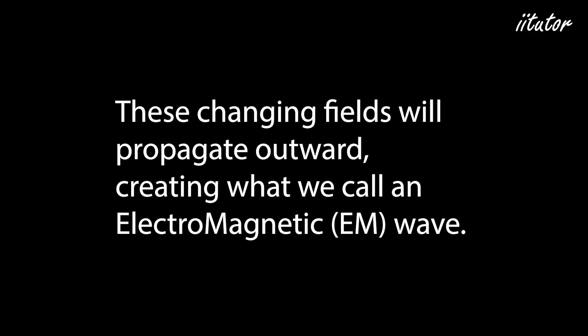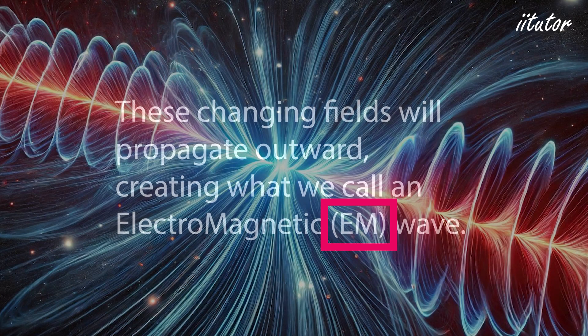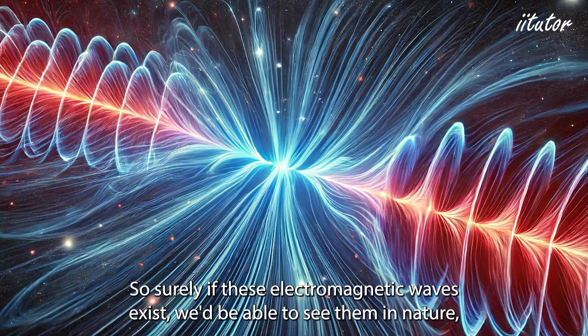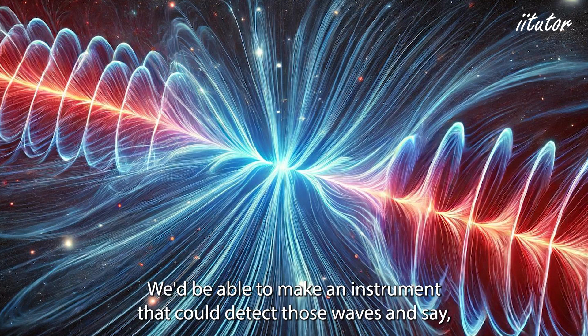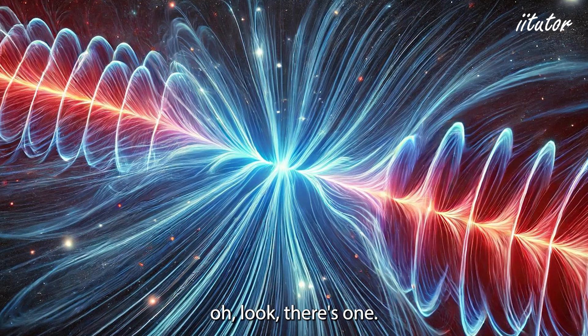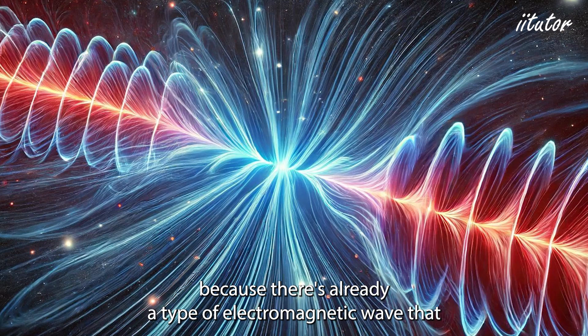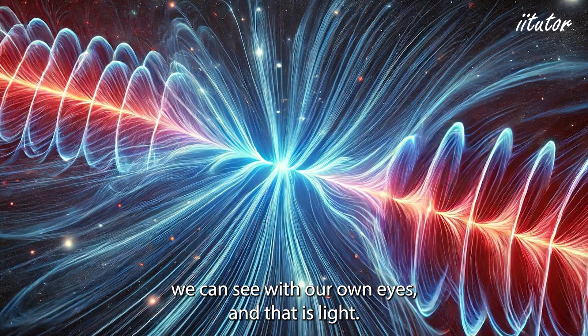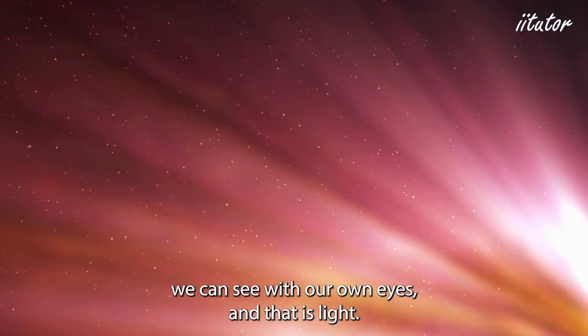Electromagnetic is such a long word that most of the time I'll abbreviate it to EM. So surely if these electromagnetic waves exist we'd be able to see them in nature. Well it turns out that we don't really need to do that because there's already a type of electromagnetic wave that we can see with our own eyes. And that is light.